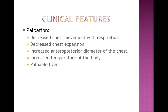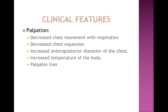On palpation, there is decreased chest movement with respiration due to severe airway obstruction and decreased chest expansion measurable by measurement. There is an increased anterior-posterior diameter of the chest — similar to emphysema in adults — because of excessive air trapping, known as barrel-shaped chest. Temperature may be elevated, and we may feel a palpable liver.